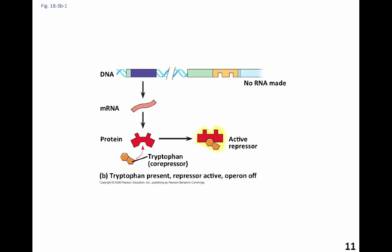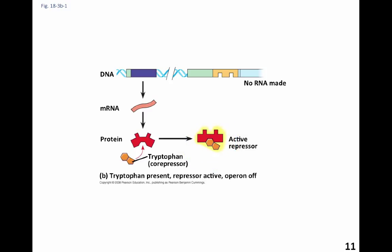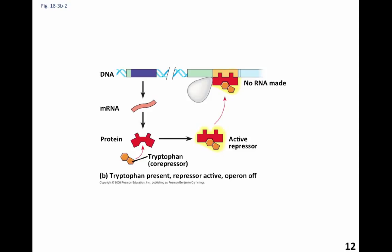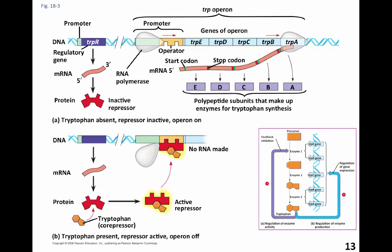When tryptophan — the amino acid end product — is present inside the bacterial cell, it can interact with the repressor molecule. The inactive repressor interacts with tryptophan, and then the active repressor is the right structure to interact with the operator in the promoter region. When it does that, RNA polymerase cannot move forward, cannot make messenger RNA, and none of those genes will be transcribed. We already have tryptophan — no need to make any more. That's negative feedback: we inhibit production of more tryptophan by shutting the process down.